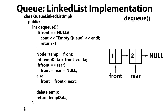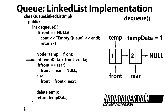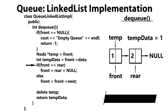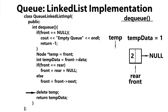Let's take a look at the dequeue method in action. If I call the dequeue method now, first we check to see if the queue is empty — it's not. So we move down here, create a temporary pointer to the front of the queue, and save the data within that node to a temporary variable. Next, we check to see if front is equal to rear — it's not. So we move down to the else statement. We advance our front pointer to point to the next node within our queue, then delete the previous first node and return the data.